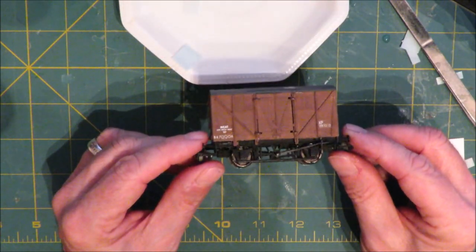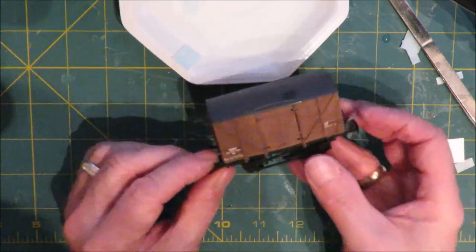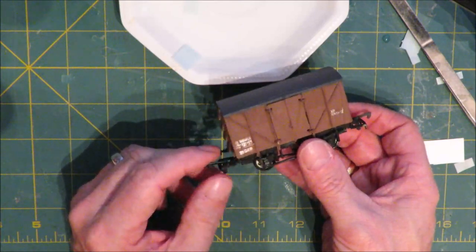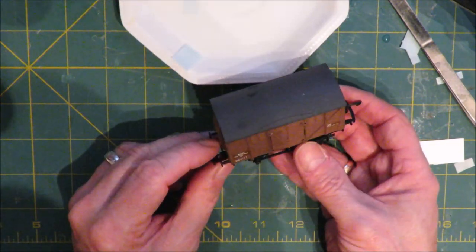There we go, that's got all the transfers on. So next we're going to do some weathering. You can if you want do things like matte varnish over the transfers to stop them shining, but I think by the time I've weathered them they'll have blended in quite well.